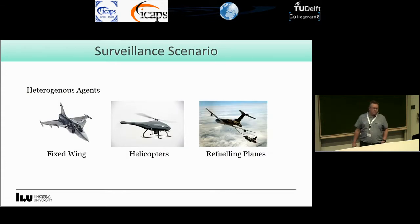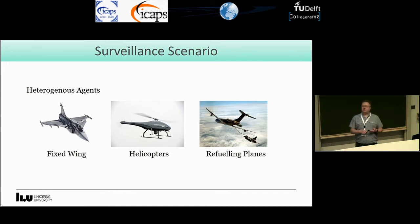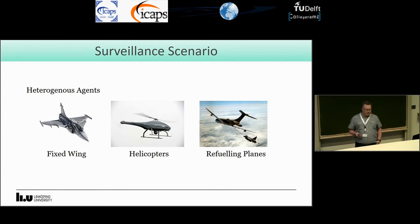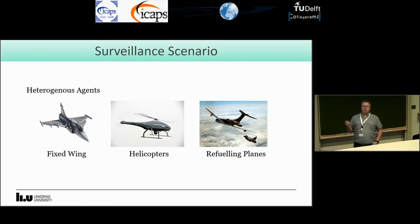The scenario I have in mind is called the surveillance scenario. In this scenario we have three types of agents, so they are heterogeneous. We have fixed wing aircraft, usually with a pilot, and helicopters that can be unmanned or have a pilot — they can hover in one location. And then we have refueling planes for the fixed wing aircraft to refuel in air, which are available only in certain time slots and certain areas of the planning problem area — a kind of time window.